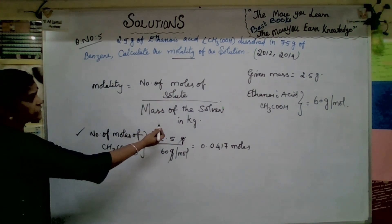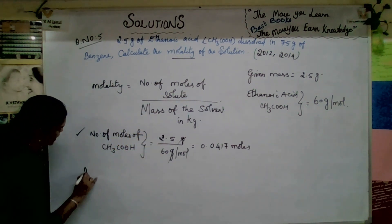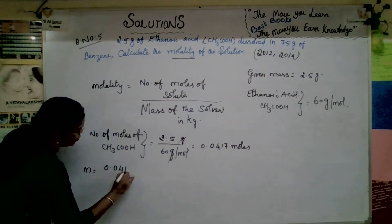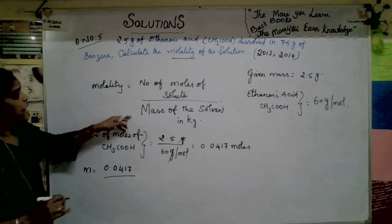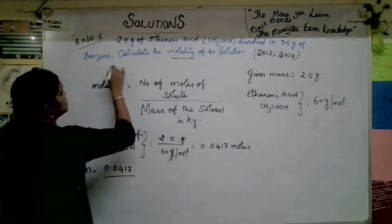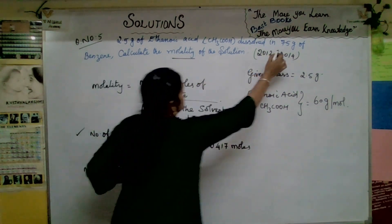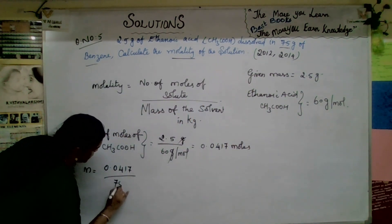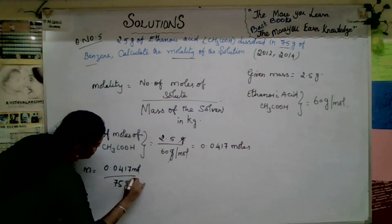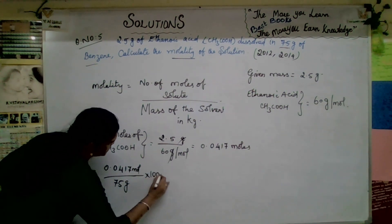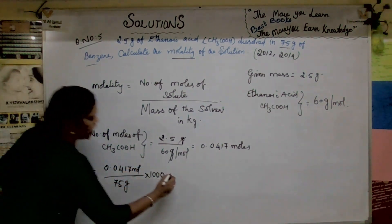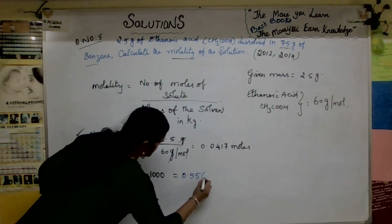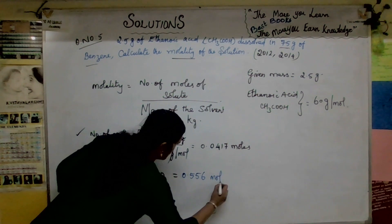Molality (small m) = number of moles of solute divided by mass of solvent in kg. Mass of solvent is 75 grams (benzene, as provided). So molality = 0.0417 ÷ 75 × 1000 = 0.556 mol per kg.